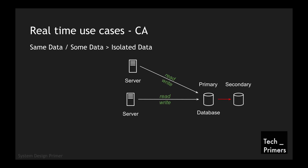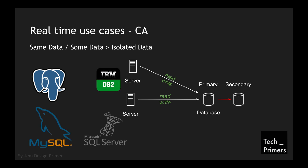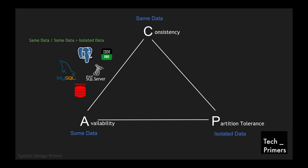Classic examples of CA databases are relational databases: PostgreSQL, MySQL, IBM's DB2, Microsoft's SQL Server, and Oracle. These all follow consistency and availability — you always read and write in the master or primary node, data is consistent, and the system is always available. There is generally no partition tolerance because you run one instance and the secondary is just a backup — you don't use it for reads or writes. That's why relational databases are consistent and available. In the CAP theorem diagram, CA prefers same data or some data over isolated data.